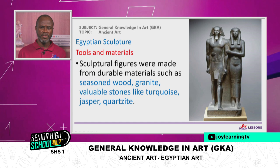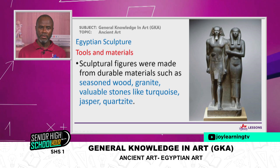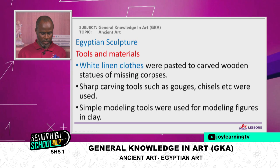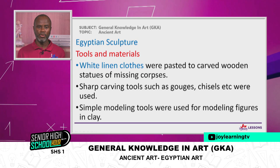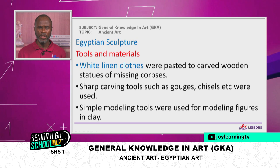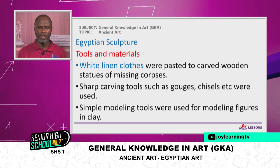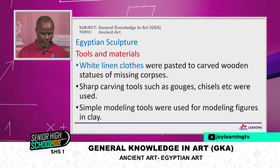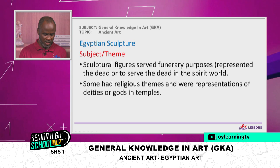This takes us to Egyptian sculpture. The tools and materials used for Egyptian sculpture included mainly wood, granite, and other valuable stones like turquoise, jasper, and quasite — very strong stones that could last as long as possible. White linen clothing was pasted on carved wooden statues of missing corpses. If a prominent person died and the body couldn't be found, then you carve a life-size image and paste linen around it, and it was respected as if it were the actual corpse. Sharp carving tools such as gouges and chisels were used, and simple sticks were used as modeling tools.